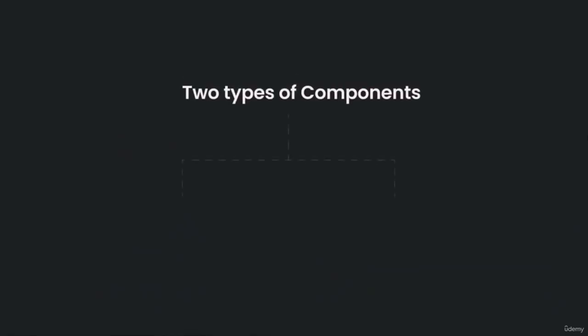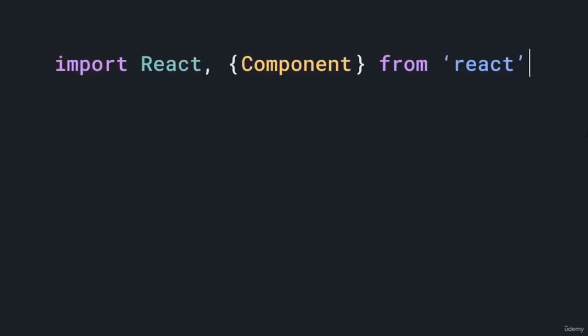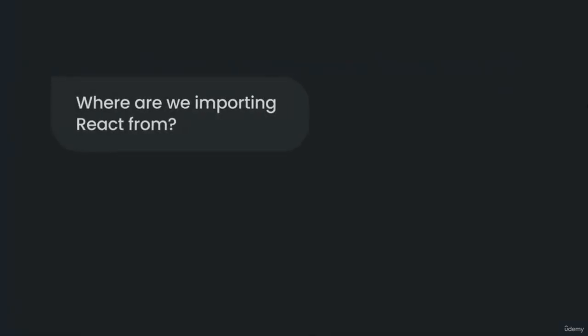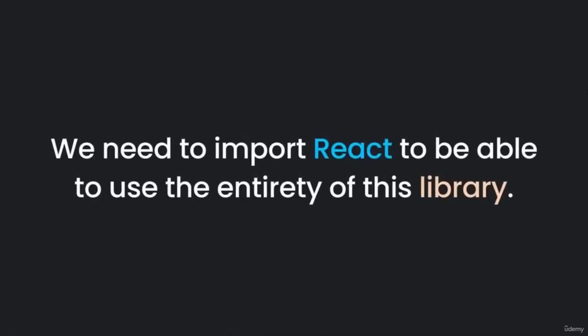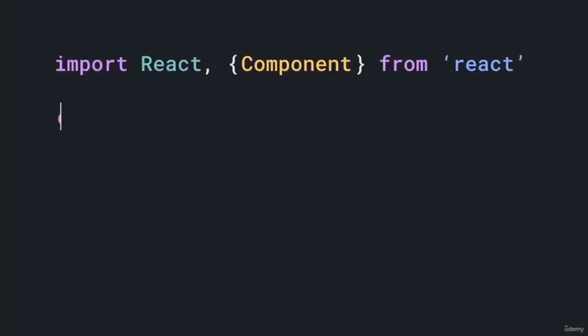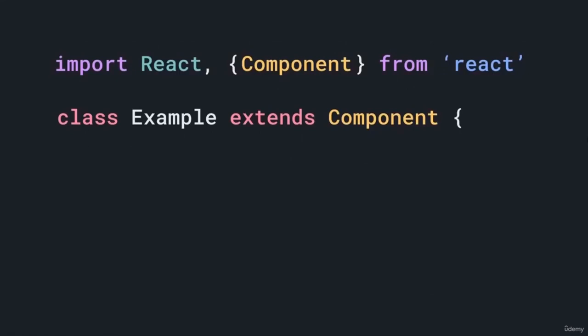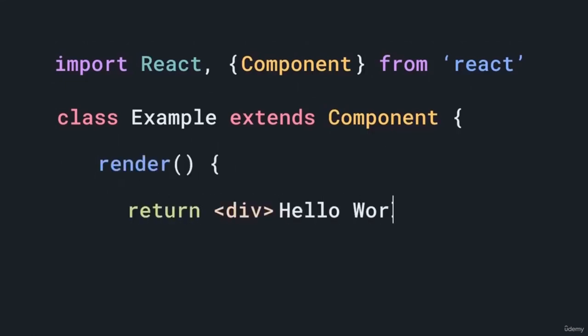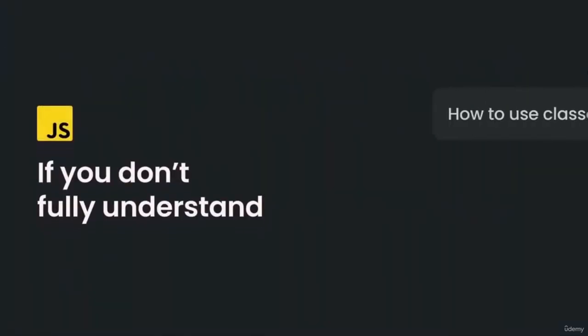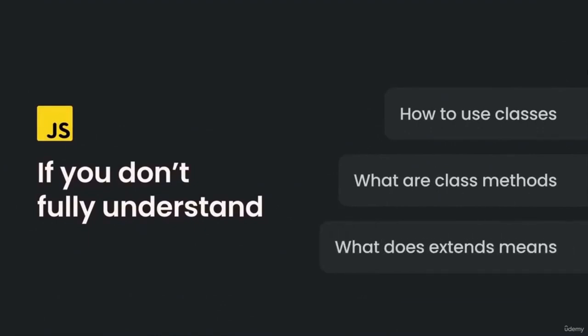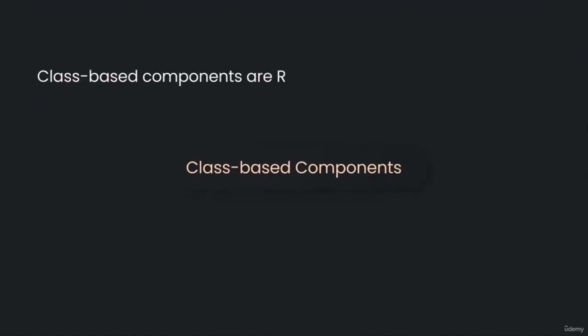There are two types of components: functional components and class-based components. In a class component, we import React and the Component structure from React, then use a regular JavaScript class that extends the React component, and use the render method that describes what should be displayed. However, class-based components are React history — they're not being used anymore and were entirely replaced by their simpler counterparts: functional components.